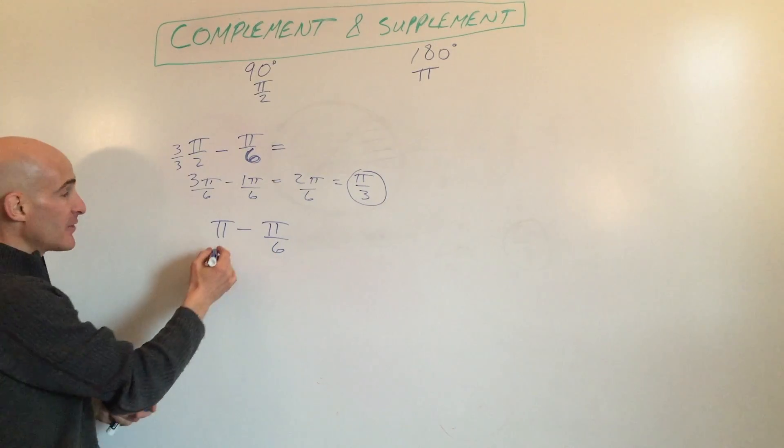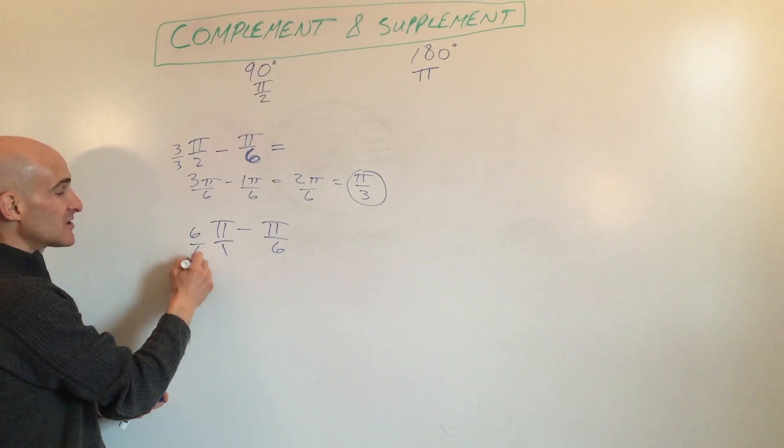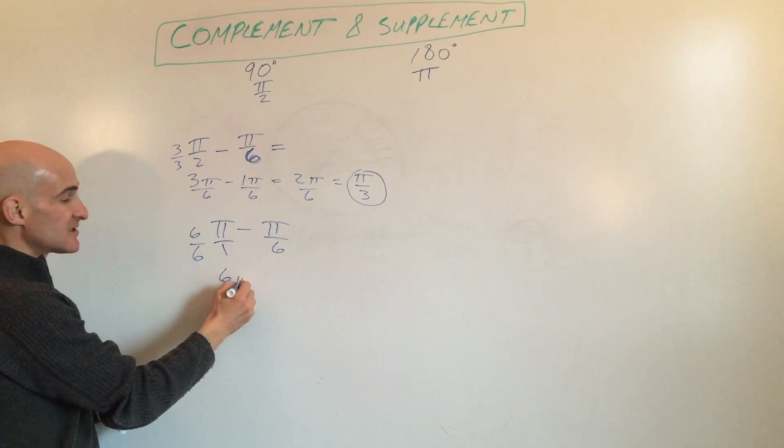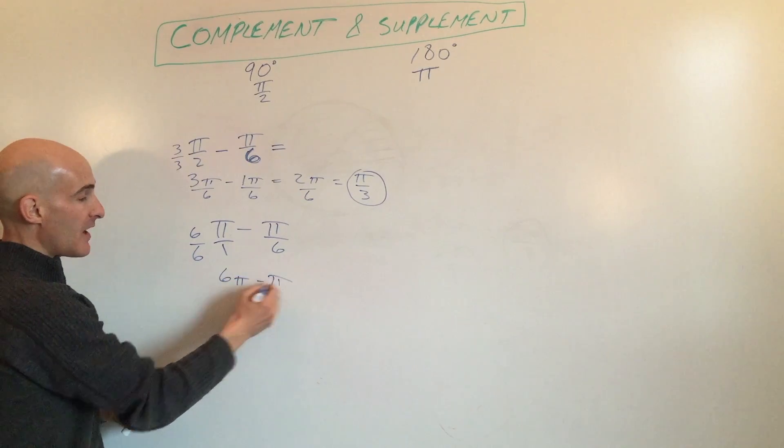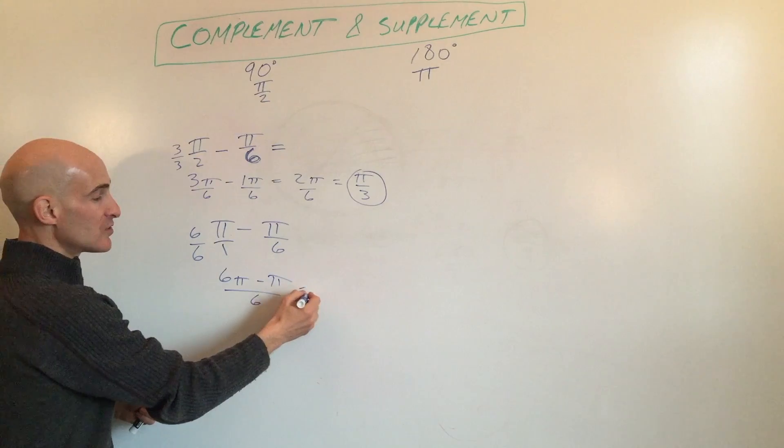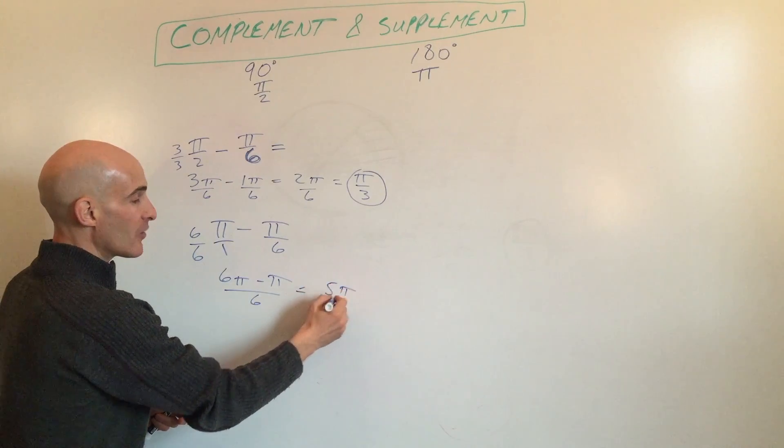Again, we have to get common denominators, so we're going to multiply by 6 over 6. So this is 6π minus 1π all over 6, which gives us 5π over 6.